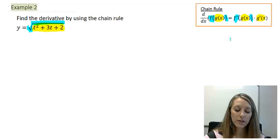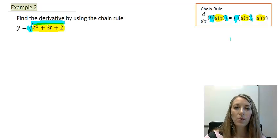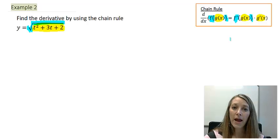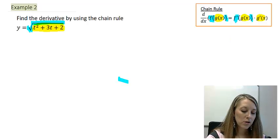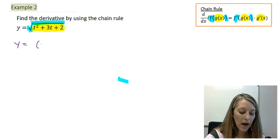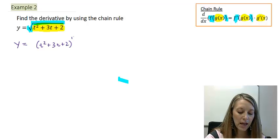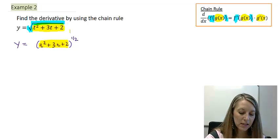When we try to take the derivative of this, we still don't know how to take the derivative of the square root other than to convert it into a power. So we must do that before taking the derivative — just manipulating the original function, so notation still stays y. I must keep my inside piece as is, and I can rewrite the square root as a one-half power. So my inside function is t squared plus 3t plus 2, and my outside function is something to the one-half power.